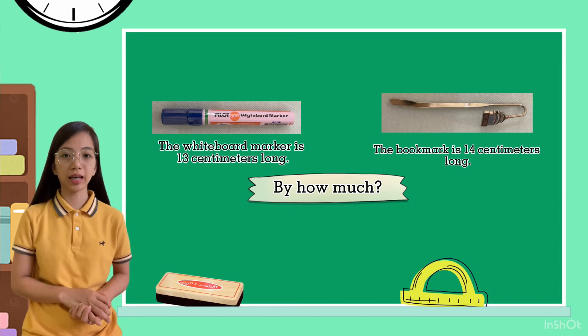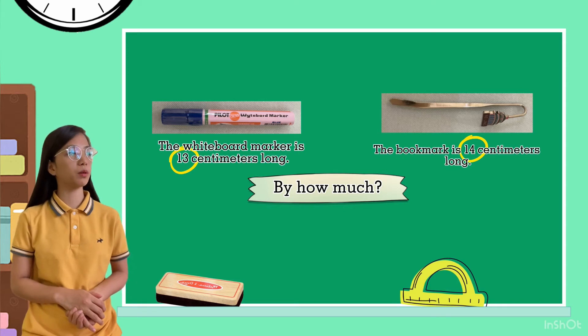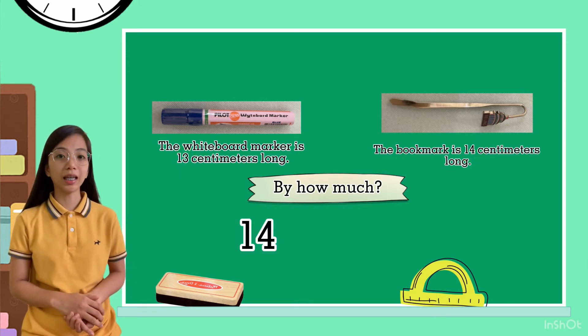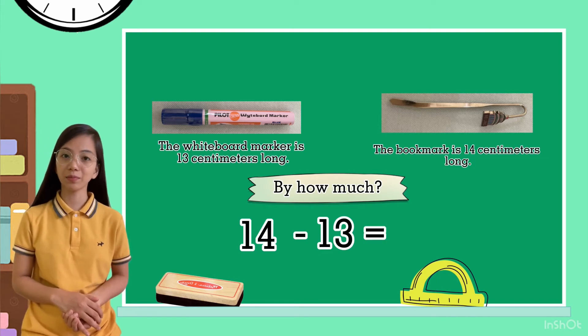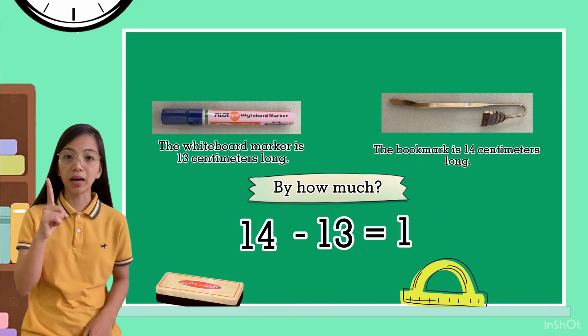Get the length of two objects. We will put 14 minus 13 equals, what is the answer? 1 centimeter.